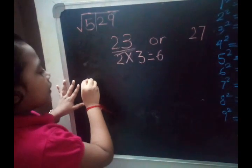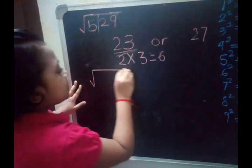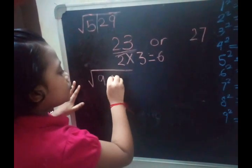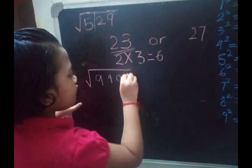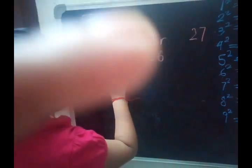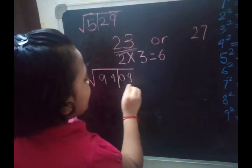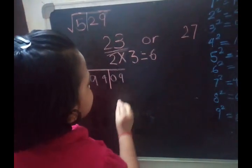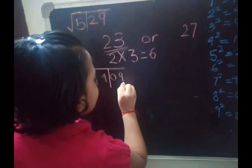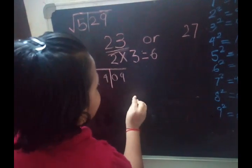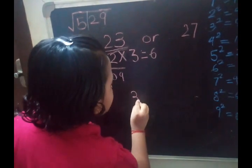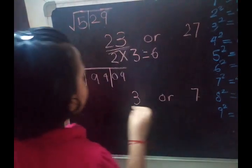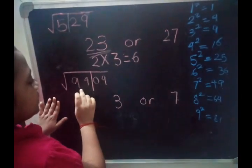Now I will take one more example: 9409. First, we separate this — on the right-hand side keep 2 digits, remaining on the left-hand side. The right-hand side ending digit is 9. If the ending digit is 9, we will get 3 or 7 in the unit space.